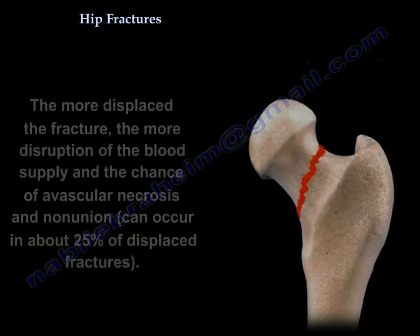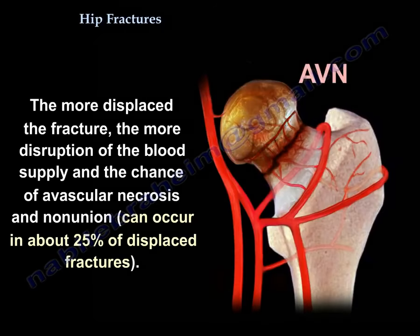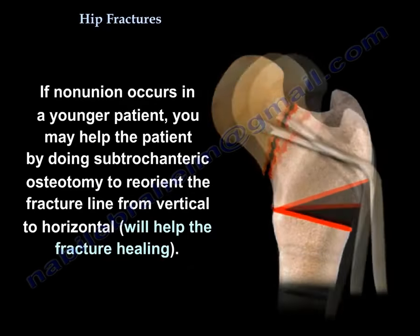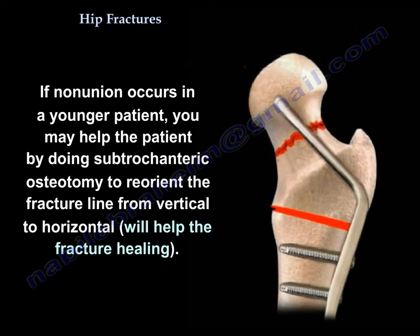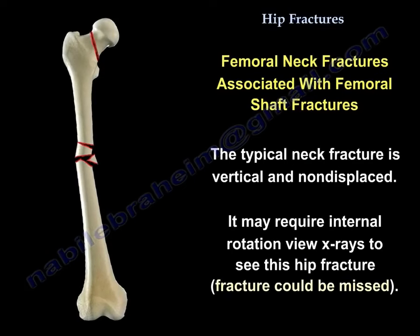The more displaced the fracture, the more disruption of the blood supply and the greater the chance of avascular necrosis and nonunion, which can occur in about 25% of displaced fractures. If nonunion occurs in a young patient, a subtrochanteric osteotomy can be performed to reorient the fracture line from vertical to horizontal, which will help fracture healing.